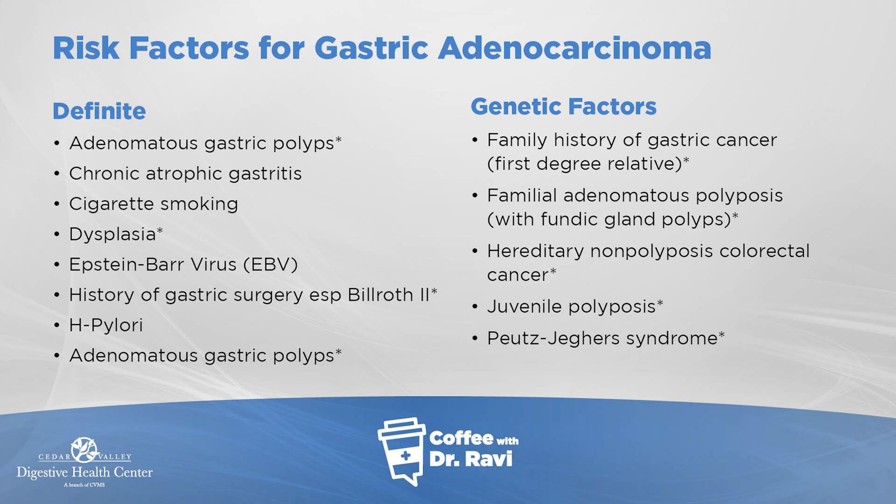People who have a family history of gastric cancer — first degree relatives — are at a slightly increased risk. There are several genetic syndromes including familial adenomatous polyposis, hereditary non-polyposis colon cancer, juvenile polyposis, and Peutz-Jeghers syndrome. These are all risk factors for gastric cancer.